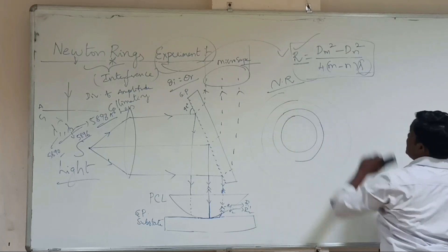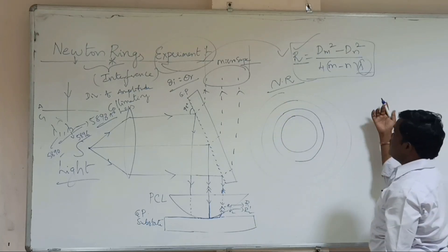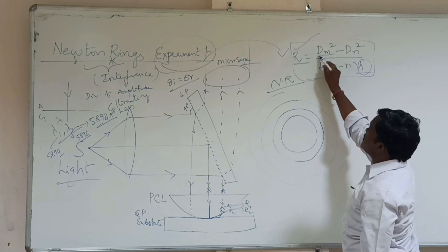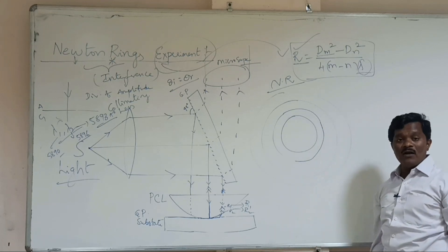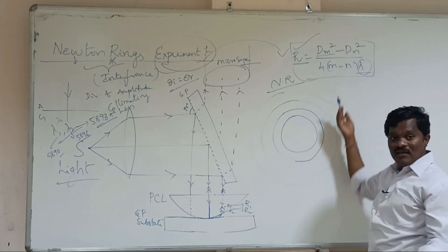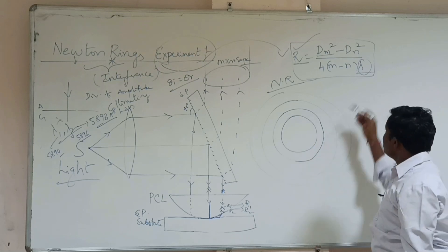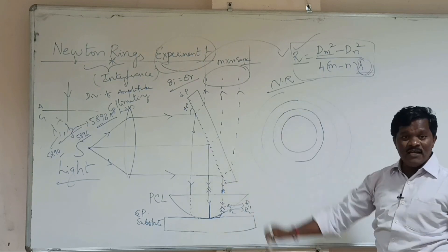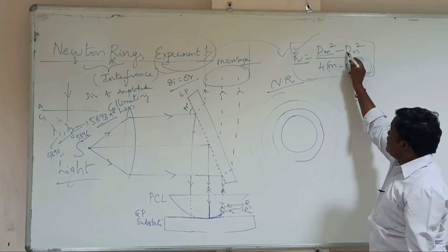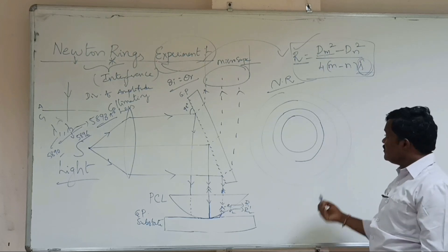In order to find the radius of curvature of the inner convex lens, we need to know the diameters of the rings — rings of M and rings of N. Since we already know lambda, which is 5893, we need only dM and dN. So, how to find out dM and dN?